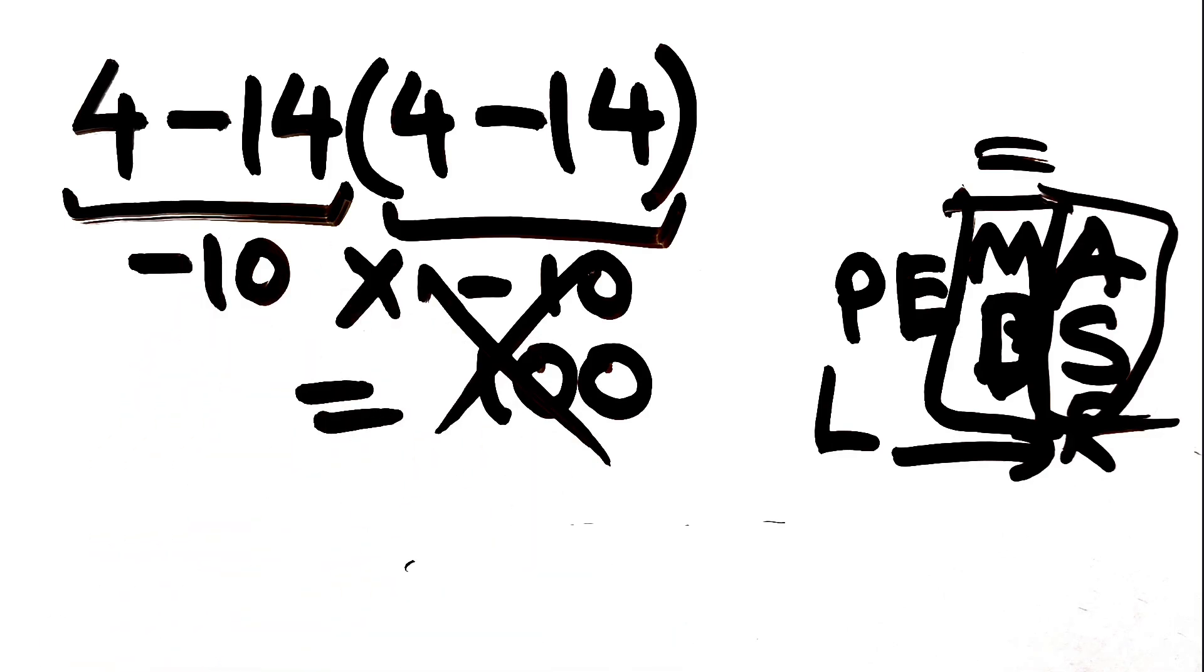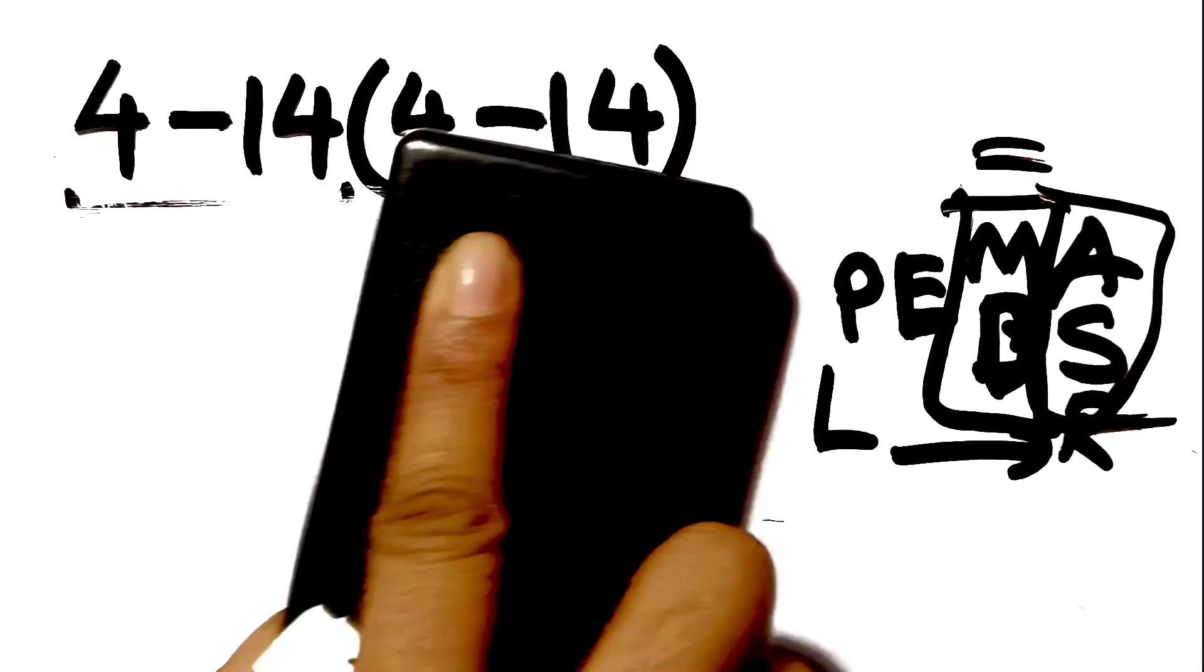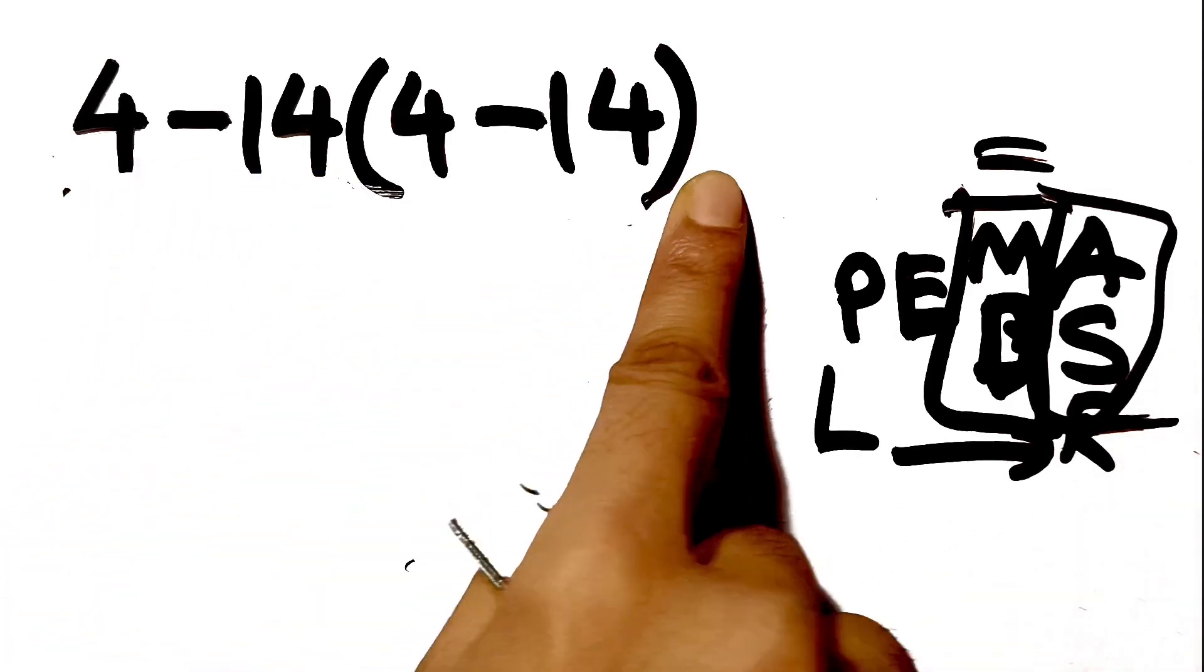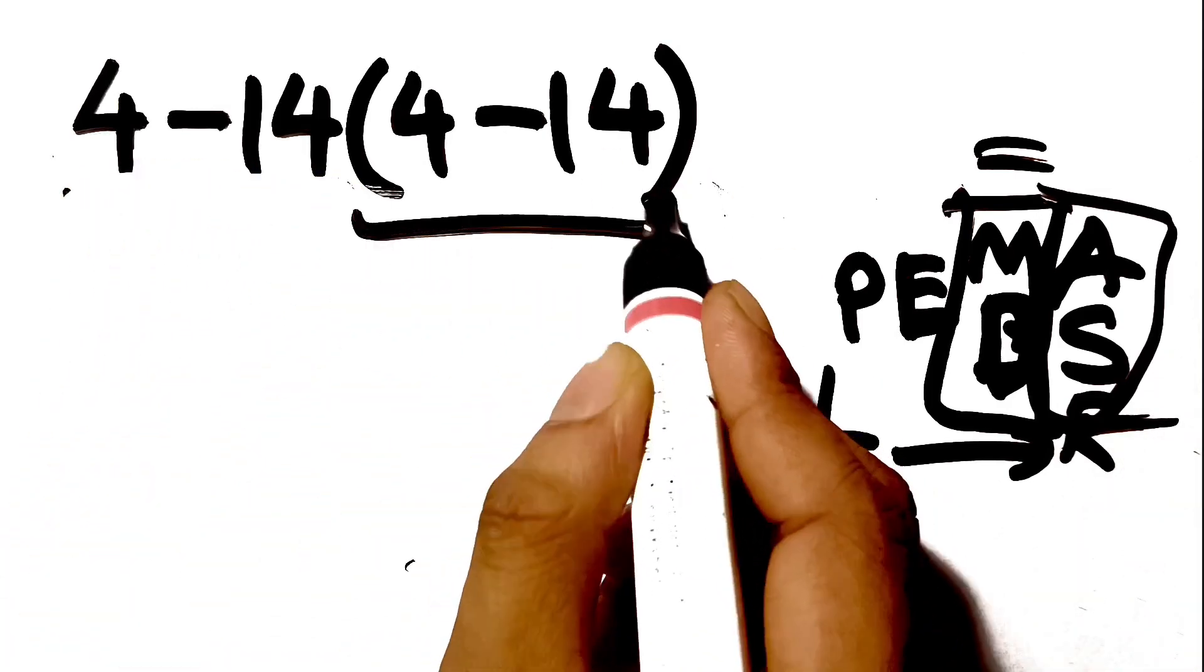Okay, so according to PEMDAS, first we have to do this parenthesis. Inside this parenthesis, we have 4 minus 14, which equals negative 10.